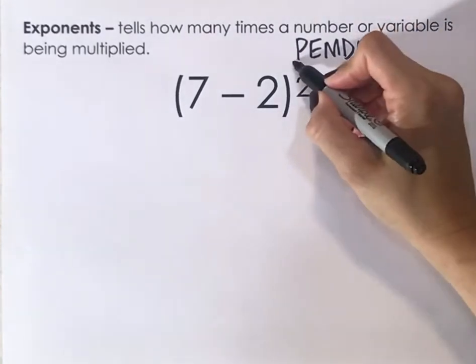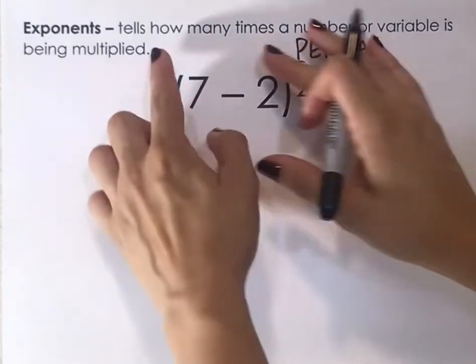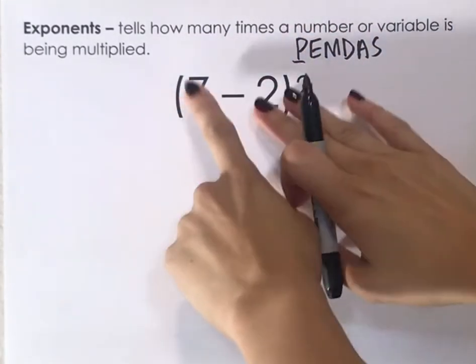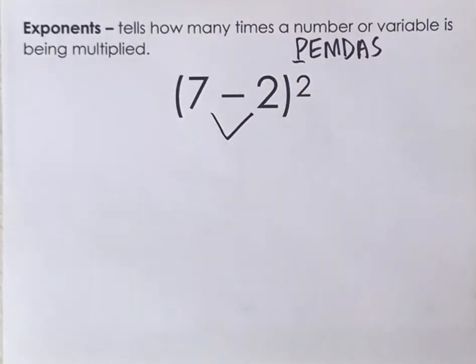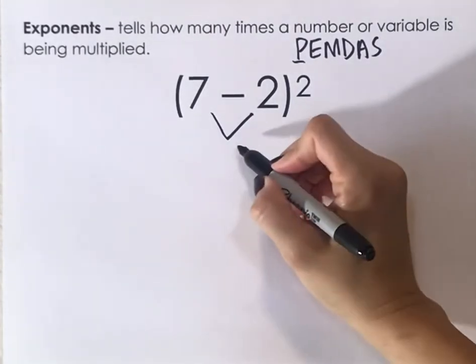So first step is we're going to solve the parentheses. So there's a parentheses here. So we're going to first do what's inside the parentheses. So we're going to do 7 minus 2, which is 5.